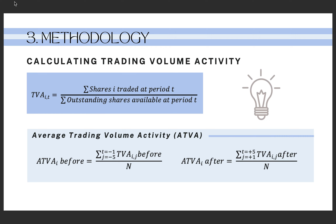Next is calculating trading volume activity. The formula is the sum of shares traded divided by outstanding shares available at the same period. Then, calculate the overall trading volume activity of sample stocks with the formula of average trading volume activity.